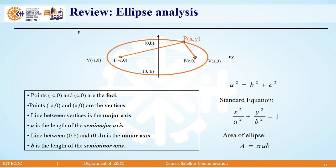These points are called as foci. Then points with (-a,0) and (a,0), these points are vertices. The line between vertices is the major axis.